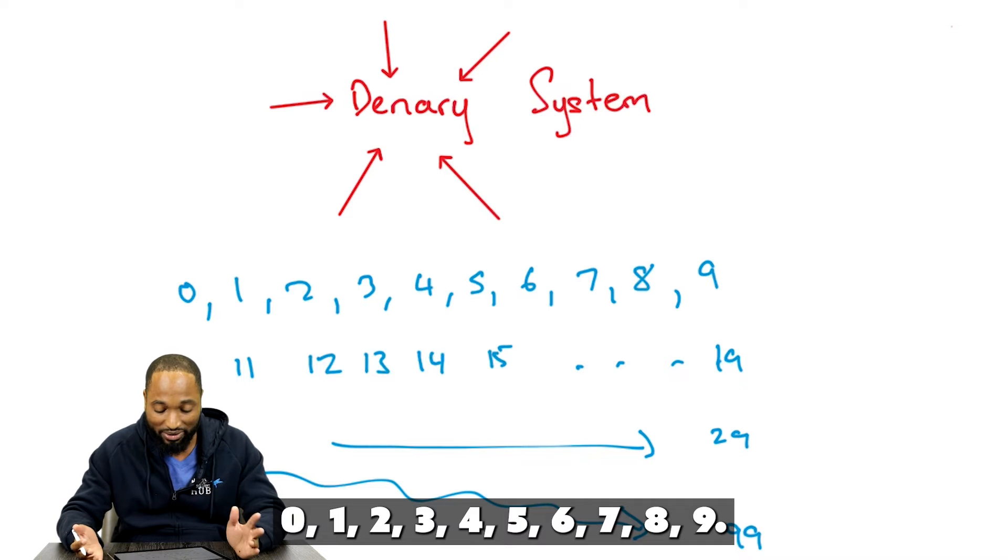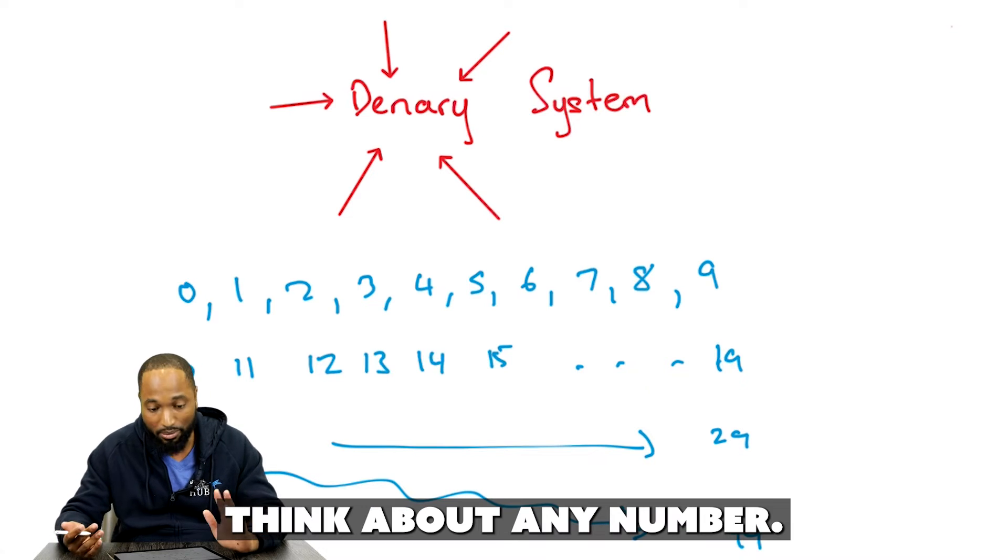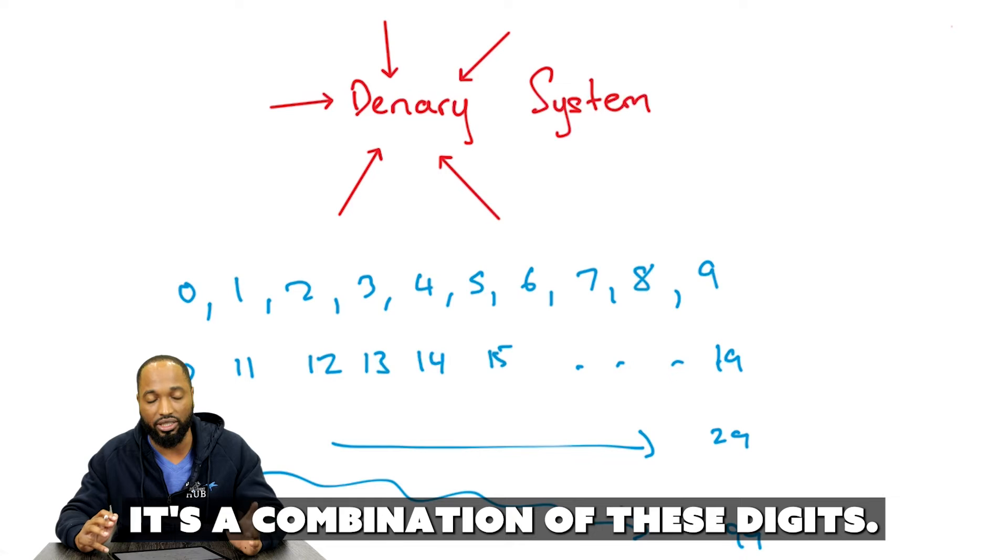So, all the numbers you can think of in the world right now make use of these 10 digits. 0, 1, 2, 3, 4, 5, 6, 7, 8, 9. Think about any number. It's a combination of these digits.